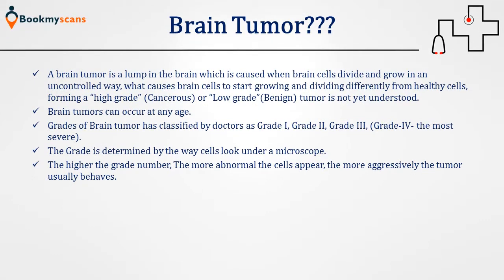A brain tumour is a lump in the brain which is caused when brain cells divide and grow in an uncontrolled way. That causes brain cells to start growing and dividing differently from healthy cells, forming a high grade — which is cancerous — or low grade — which is benign — tumour, which is not fully understood yet. Brain tumours can occur at any age.